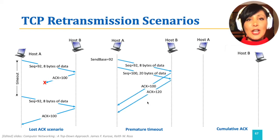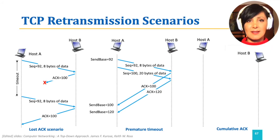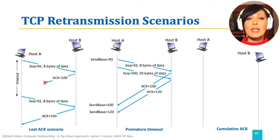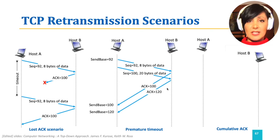The second scenario is the event of late receipt of a cumulative ACK. Let's assume the sender sends two segments: one with sequence number 92 and 8 bytes of data, and the following segment with sequence number 100 and 20 bytes of data. The corresponding cumulative ACKs are sent from the receiver side on receipt, but ACK 100 does not reach the sender before the timeout.